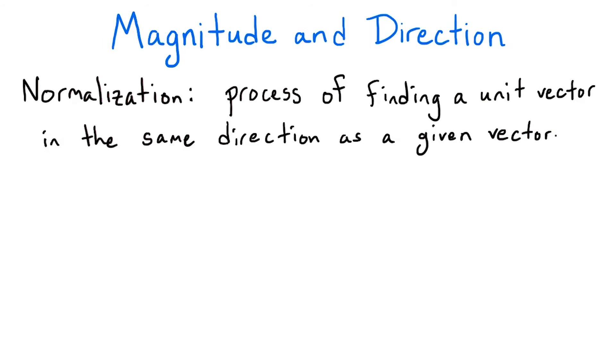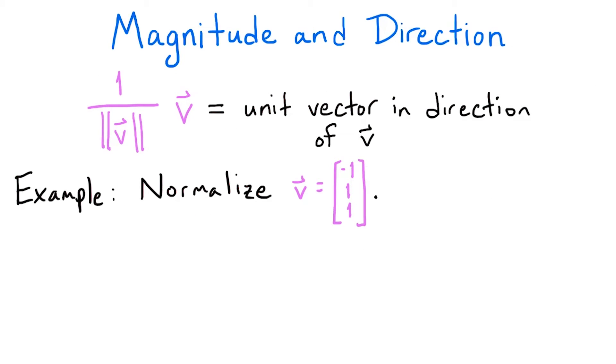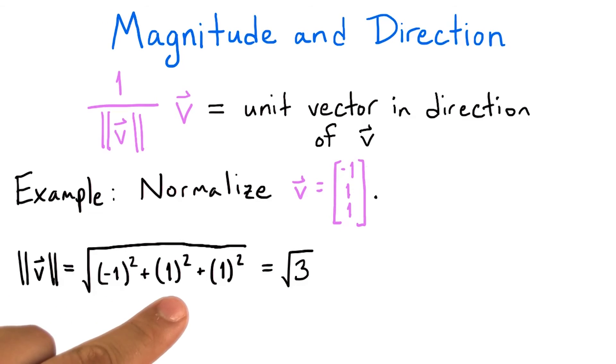Normalization has two steps. If we want to normalize the vector v, the first step is to find its magnitude. The second step is then to perform a scalar multiplication. We multiply v by the number 1 over the magnitude of v. This scales the vector up or down so that its length becomes 1. So if we wanted to normalize the vector v equals negative 1, 1, 1, we first find its length. The magnitude of v equals the square root of negative 1 squared plus 1 squared plus 1 squared, which equals the square root of 3.